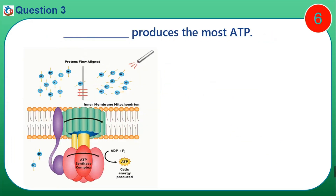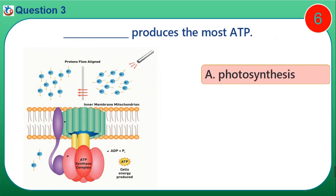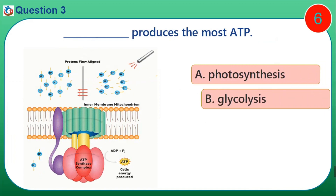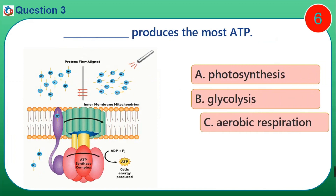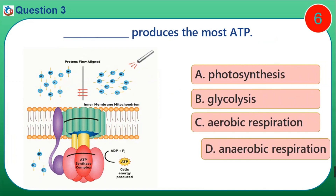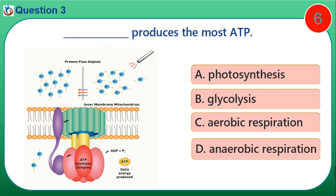Question 3. Which produces the most ATP? A. Photosynthesis. B. Glycolysis. C. Aerobic respiration. D. Anaerobic respiration.